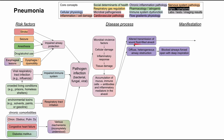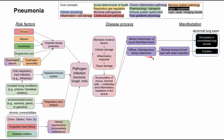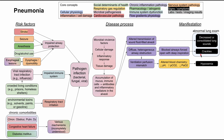The accumulation of mucus and immune cells causes antibodies and inflammatory mediators in the alveoli, leading to altered transmission of sound in the fluid-filled alveoli. This can cause decreased or consolidated lung sounds on your lung exam. Additionally, diffuse heterogeneous airway obstruction causes blocked airways to be forced open with deep inspiration — this is the physiology behind crackles you might hear on airway exam. Diffuse heterogeneous airway obstruction can also cause a VQ mismatch — a ventilation-perfusion mismatch — resulting in altered blood chemistries where you become acidic, with low pH, high PCO2, and low PaO2. This is the manifestation of hypoxemia.